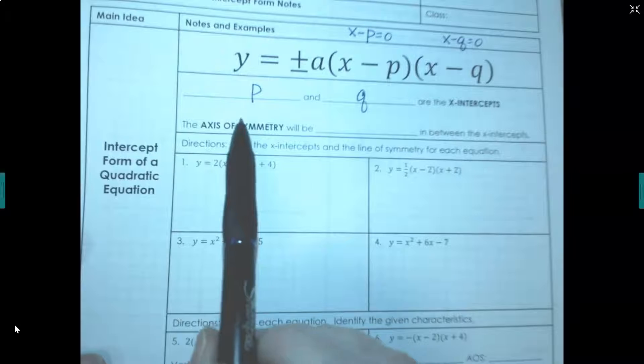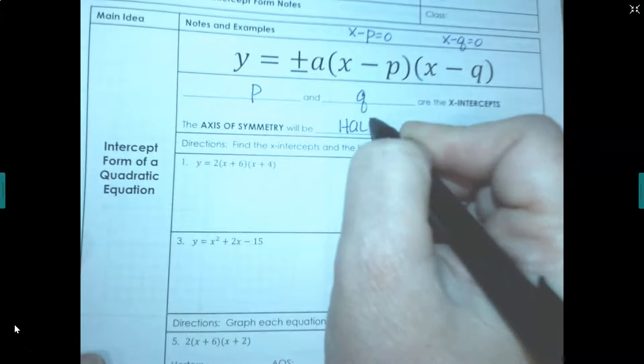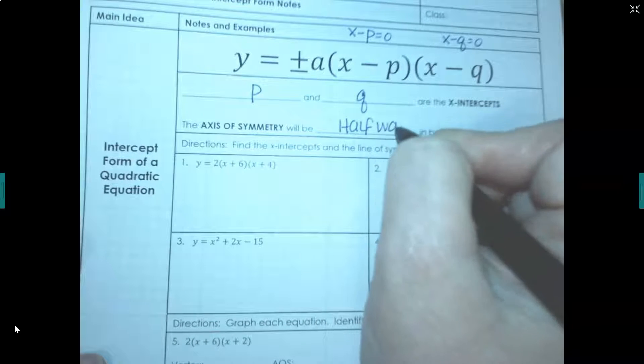When we have our x-intercepts, our axis of symmetry will be halfway between those two values.